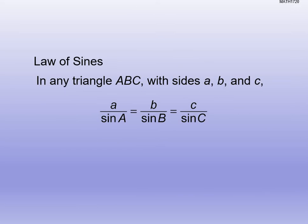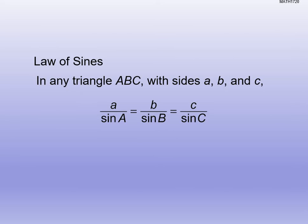I'm not going to give you the derivation for the law of sines. Here is the law of sines, which we can write a couple of different ways. In any triangle ABC with side lengths a, b, and c, the lowercase letter refers to the side length and the uppercase letter refers to the angle. Little a is always across from big A, little b across from big B, and little c across from big C.